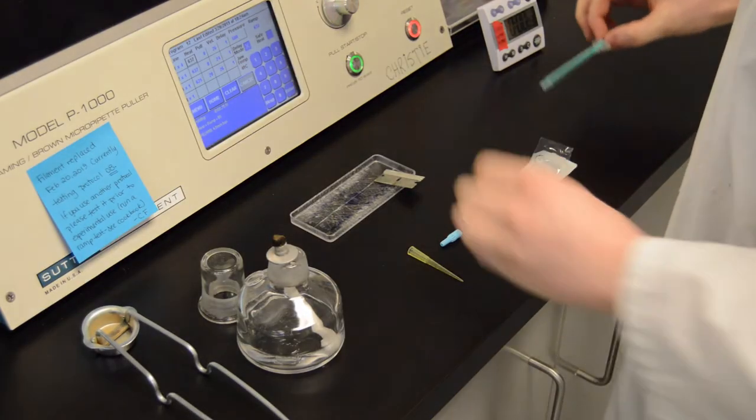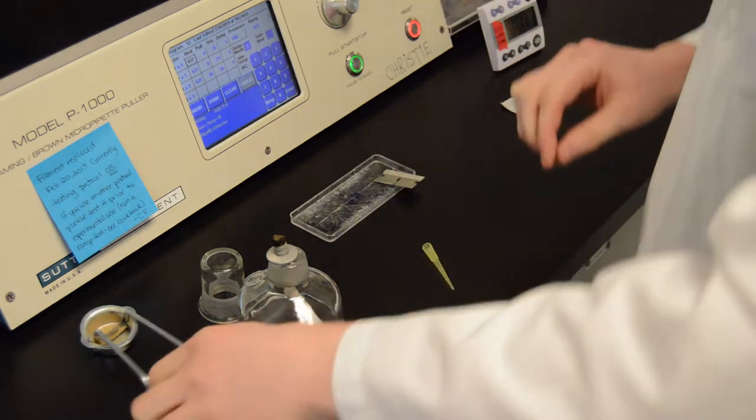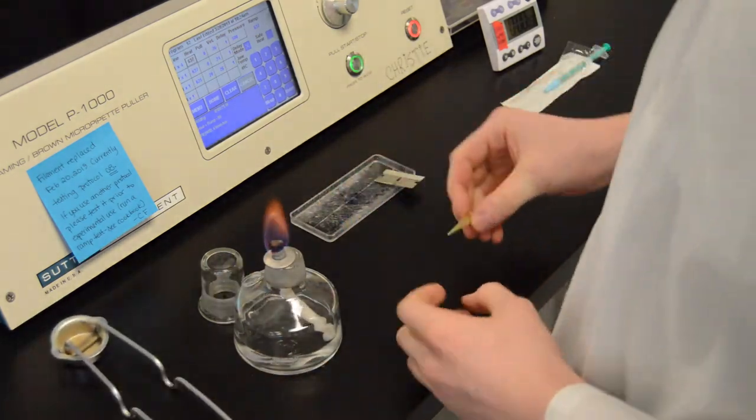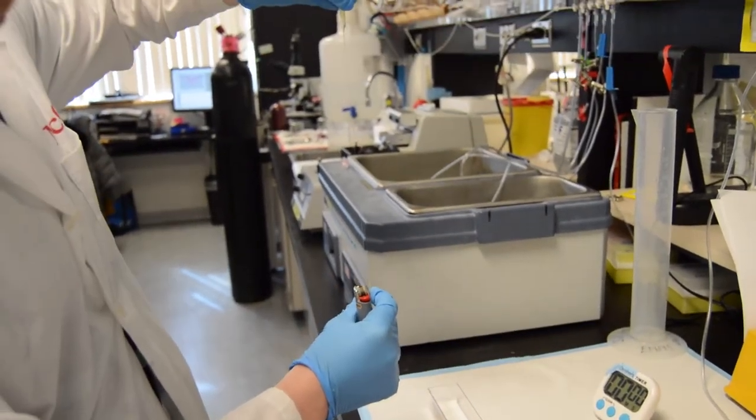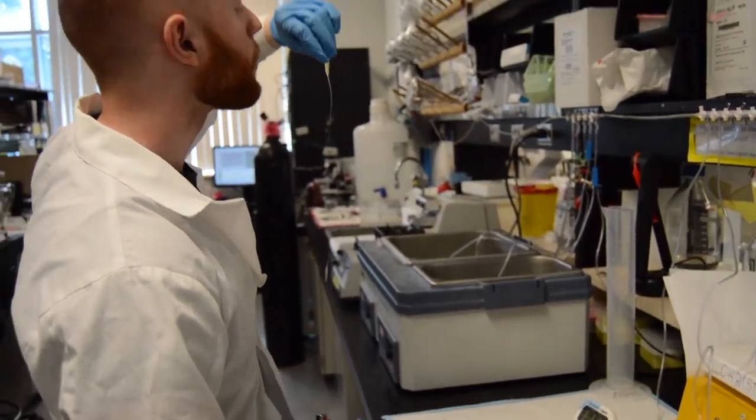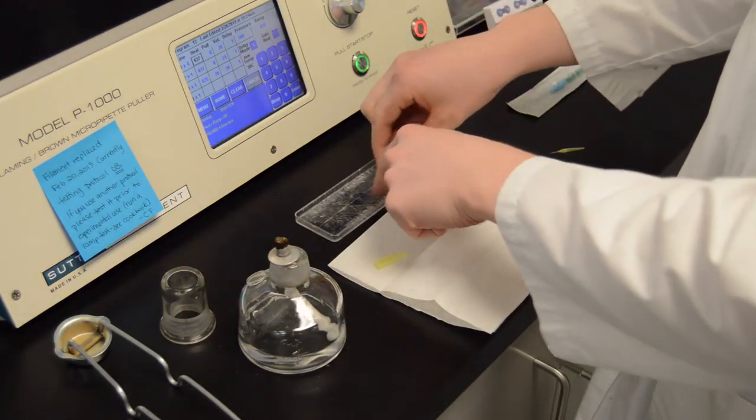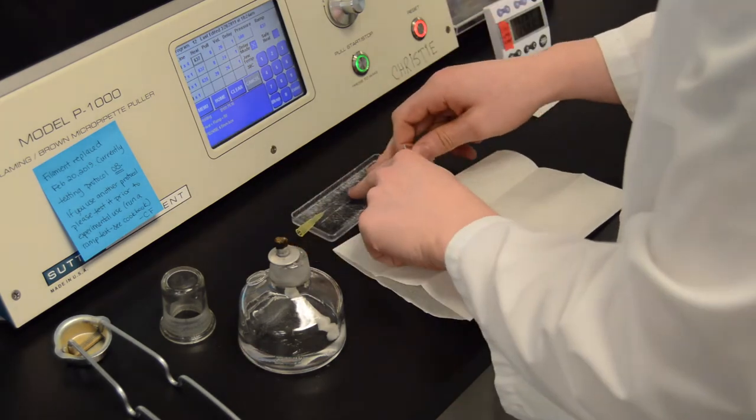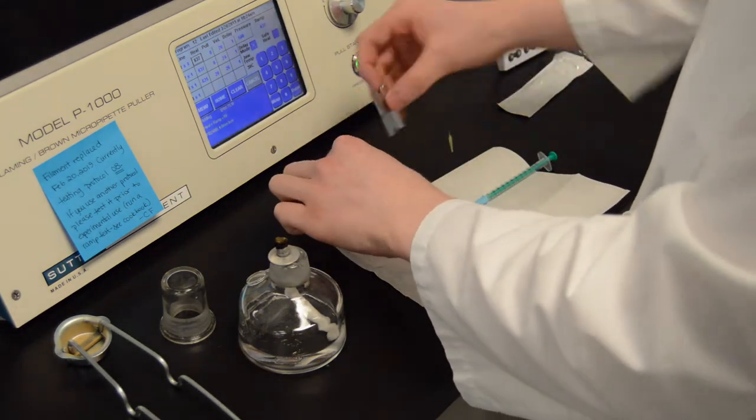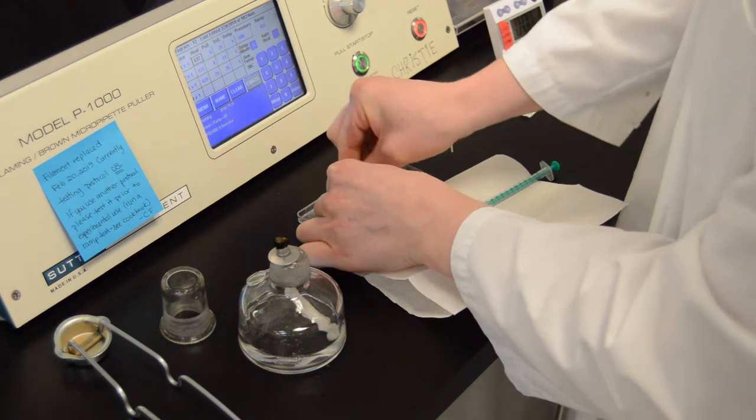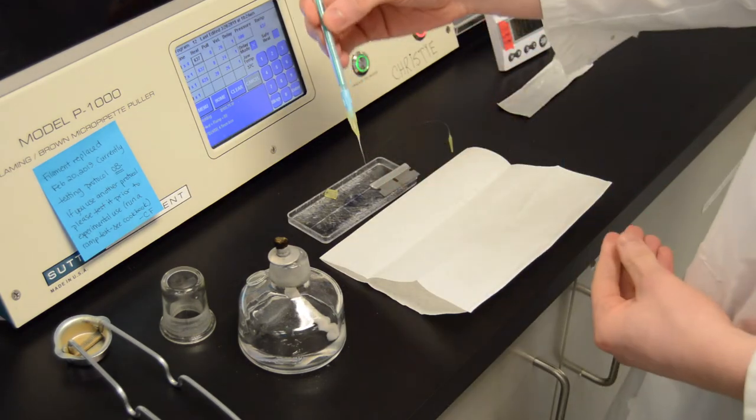We will then prepare a pipette filler for the intracellular solution. We have a syringe, a filter, and a pipette tip. We create an open flame, and then use the pipette tip to stretch its length, such that we can create a very fine diameter of the tip. Once the tip has cooled, we can then cut off the excess part of the tip, ensuring that the tip is still long enough, so that it can reach the bottom of the glass recording pipettes. We then can assemble the entire pipette filler, and fill it with the intracellular solution that will be used for our recordings.